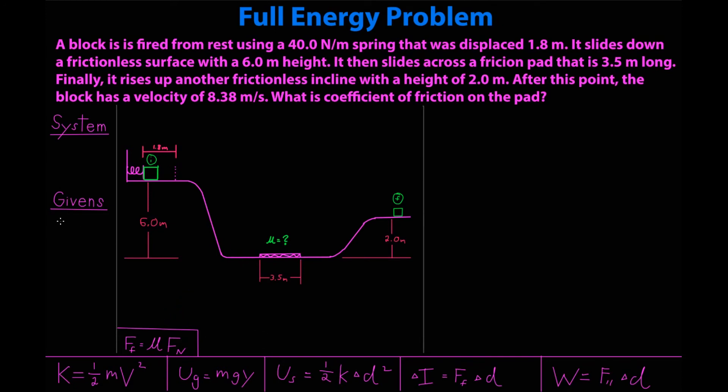Let's start with our givens. And to start out, I will begin with the spring. K is 40 newtons per meter. Delta D initial is 1.8 meters. Delta D final is 0 meters because it's completely released. Separate these. Height initial is 6 meters. Height final is 2 meters. VI is 0 meters per second. VF is 8.38 meters per second. And in this problem, we're going to assume we're given the mass as well. So mass of the block is 3 kilograms. Now, we have a lot of information here and a lot of stuff going on.